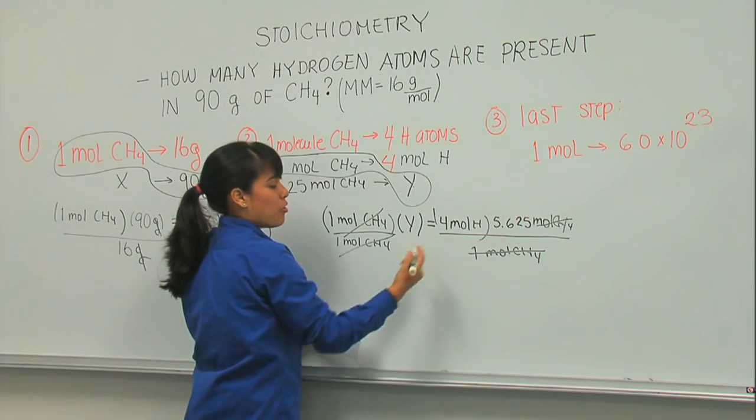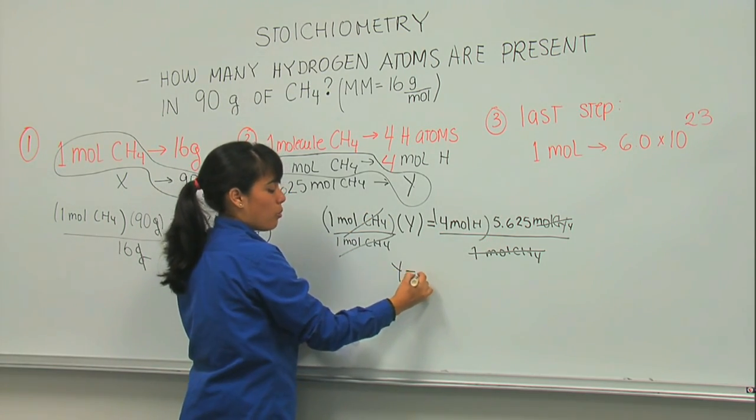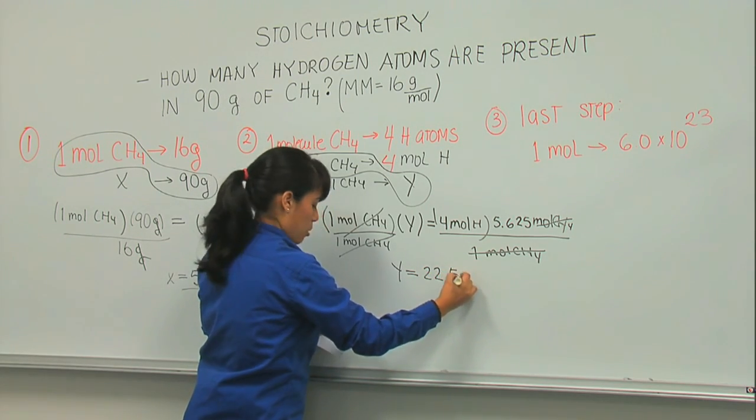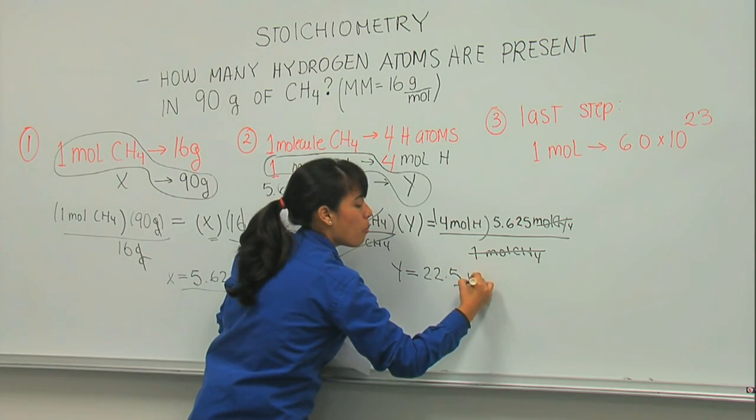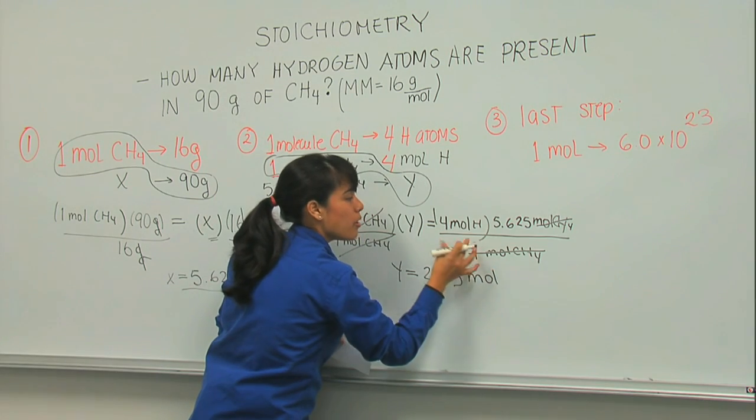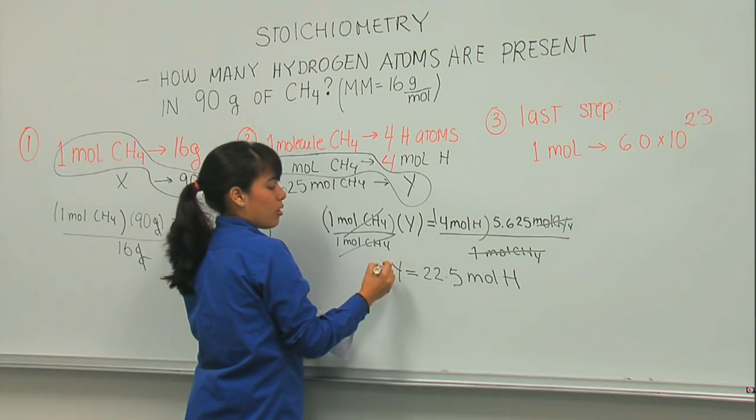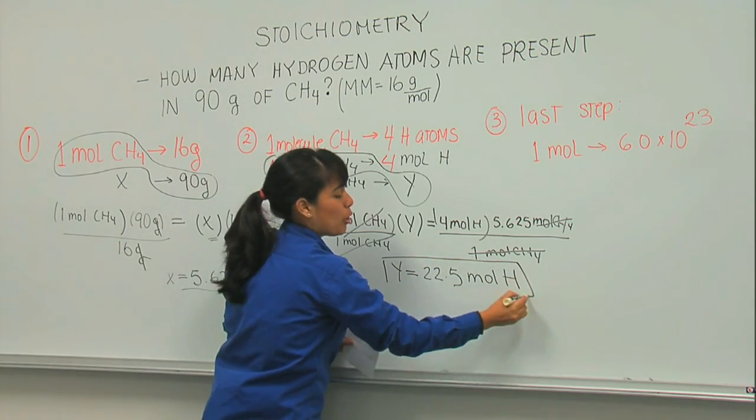Once you do the operation, you will know that Y is 22.5 moles of hydrogen. We are close.